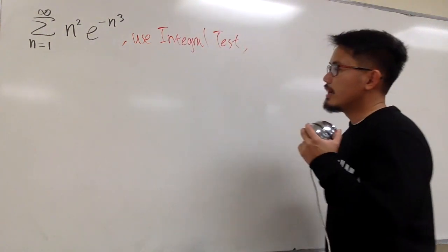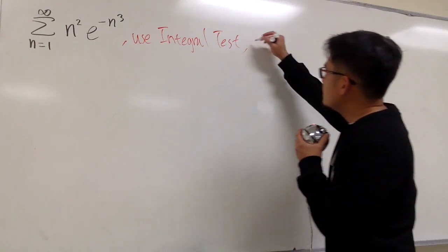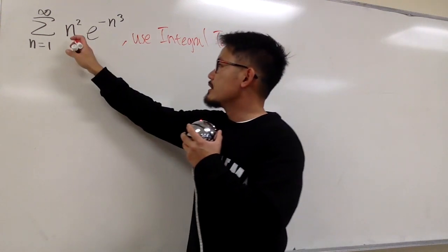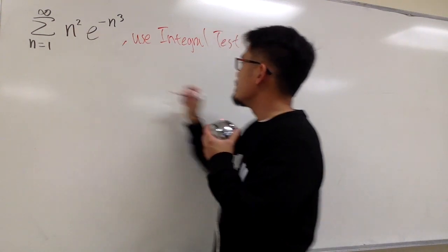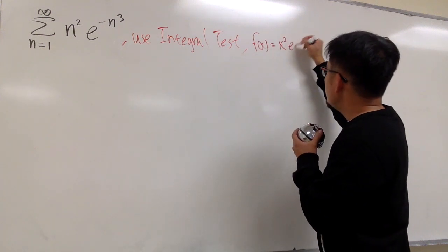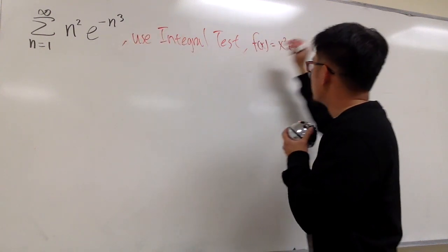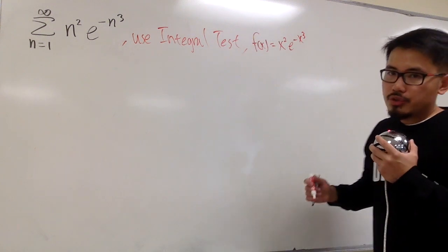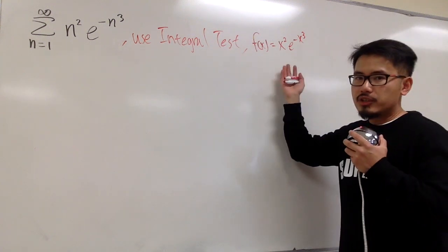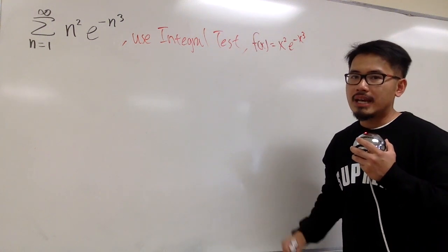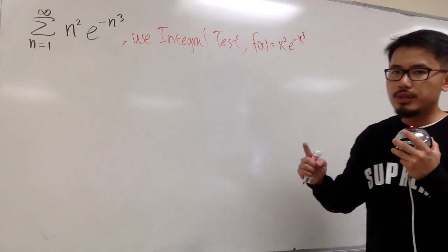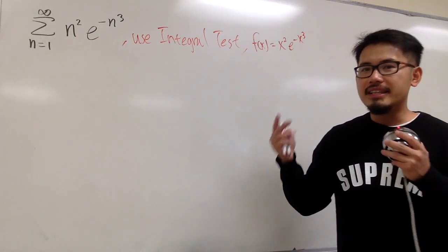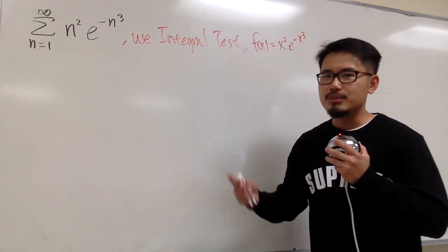To use the integral test, we first identify the function: f(x) = x squared times e to the negative x to the third power. We have to make sure this function satisfies three conditions: first, it is continuous; second, it is decreasing; and third, it is positive.